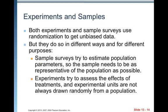Both experiments and sample surveys use randomization to get unbiased data, but they do so in different ways and for different purposes. Sample surveys try to estimate population parameters, so the sample needs to be as representative of the population as possible. Experiments try to assess the effects of treatments, and experimental units are not always drawn randomly from a population — typically they're volunteers. We don't randomly select them, but we do randomly assign them to treatments.